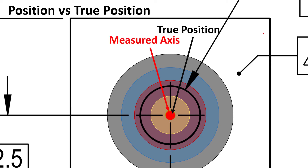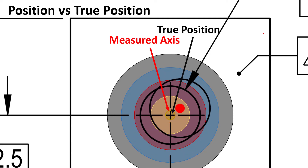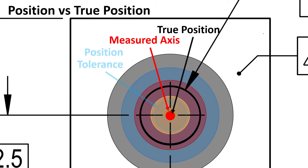But what is position? We know that this measured axis — the dart we're throwing — has to land somewhere on this part. We have to define how far away from the bullseye that dart, or this measured axis, can hit. How far off perfect, or true position, can that dart come? That's where position comes in. Position tolerance defines the diametric tolerance zone — for a hole, how far away that measured axis can come from true position. That dart can only go so far away from the bullseye and still pass inspection; this measured axis can only come so far away from true position before it fails its position tolerance.